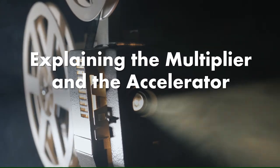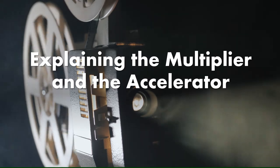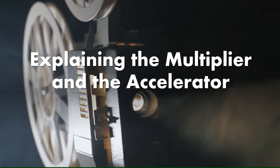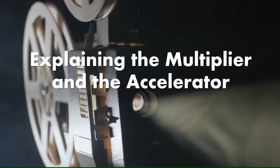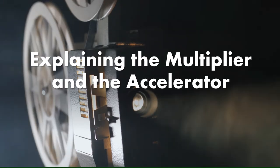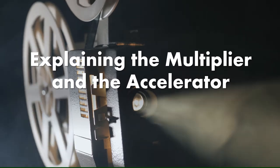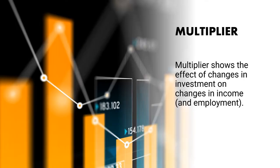Hello everyone and welcome once again to your very own channel, Easy and Effortless Economics. In today's lecture we are going to discuss one of the very important concepts of microeconomics — multiplier and accelerator. Before starting, let's understand what multiplier and accelerator actually are. Multiplier is basically the relationship between investment and income, and accelerator is the relationship between consumption and investment.